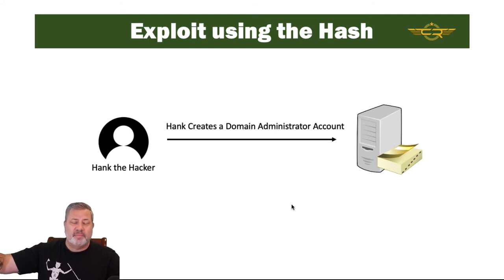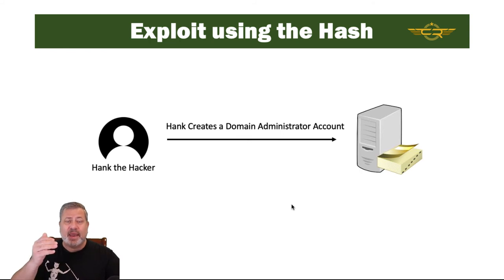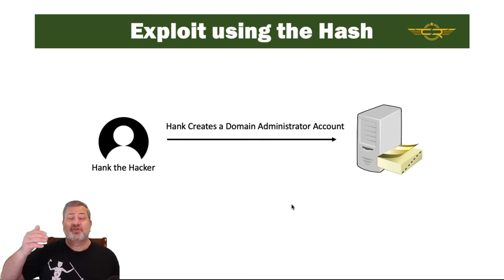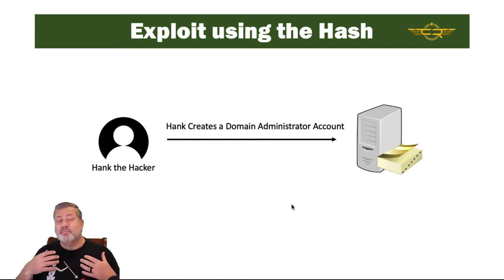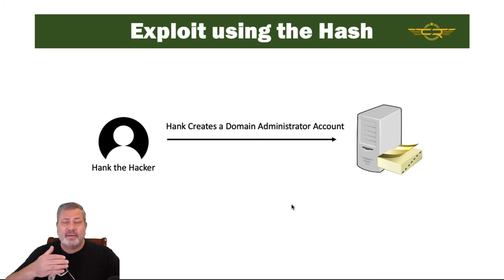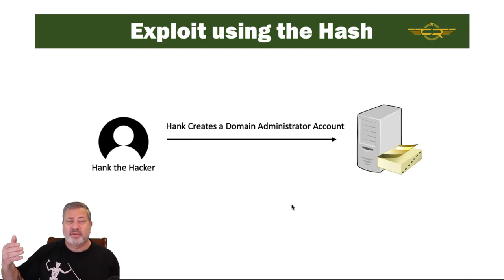All Hank has to do is pass that off as if he's Dan. He'll send a request to create a domain administrator account. The domain controller will send back a challenge, and Hank, acting as Dan, will encrypt that challenge using the password hash of Dan's password that he just stole from Alice. Then the domain controller will create the account. Normally there's logging going on, so this may get noticed quickly, but maybe we can elevate an existing account to domain admin — and then it becomes game over. Now Hank has domain level privileges on this network. That's the way this thing works, and that's why it's so dangerous.